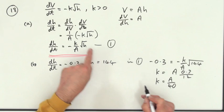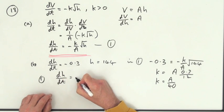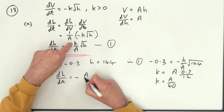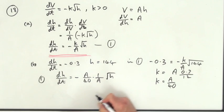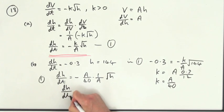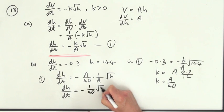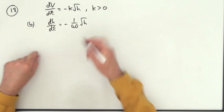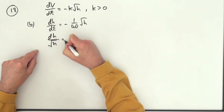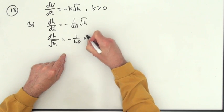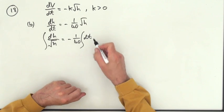So that means I've got K equals A upon 40. So we could pop that back into here. So number 1 now reads, dH by dT is negative of, and K is A upon 40, times 1 over A, and that'll be root H. So we have dH by dT would be negative 1/40 of root H. And then we could split that. dH over root H will be negative 1/40 of dT, and that's ready to integrate.